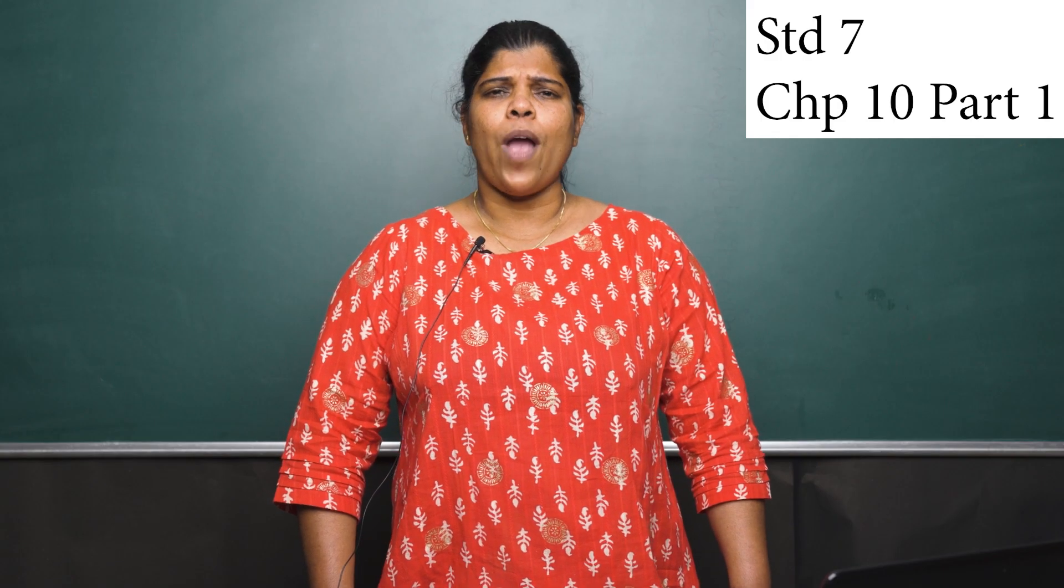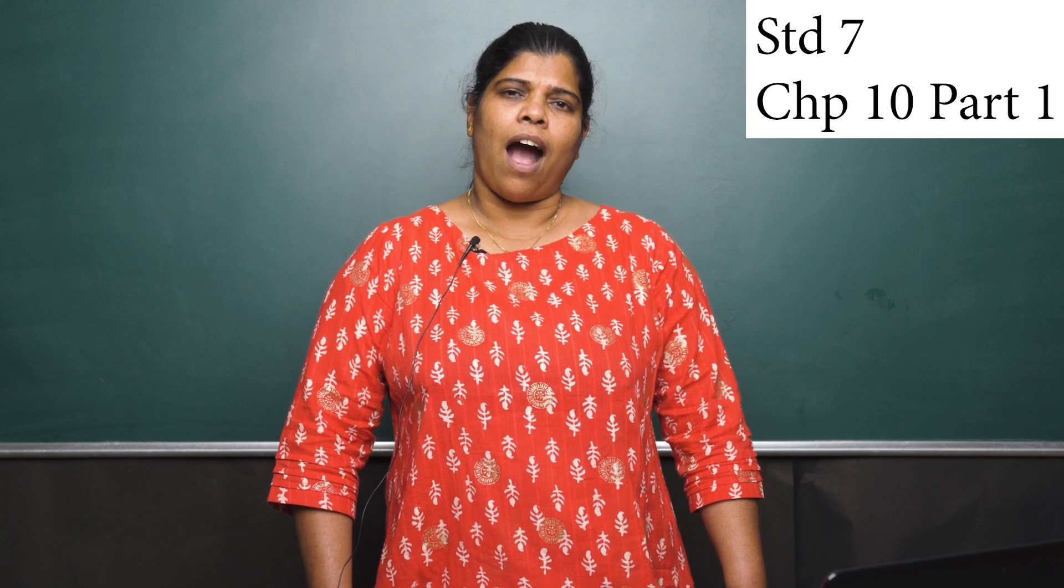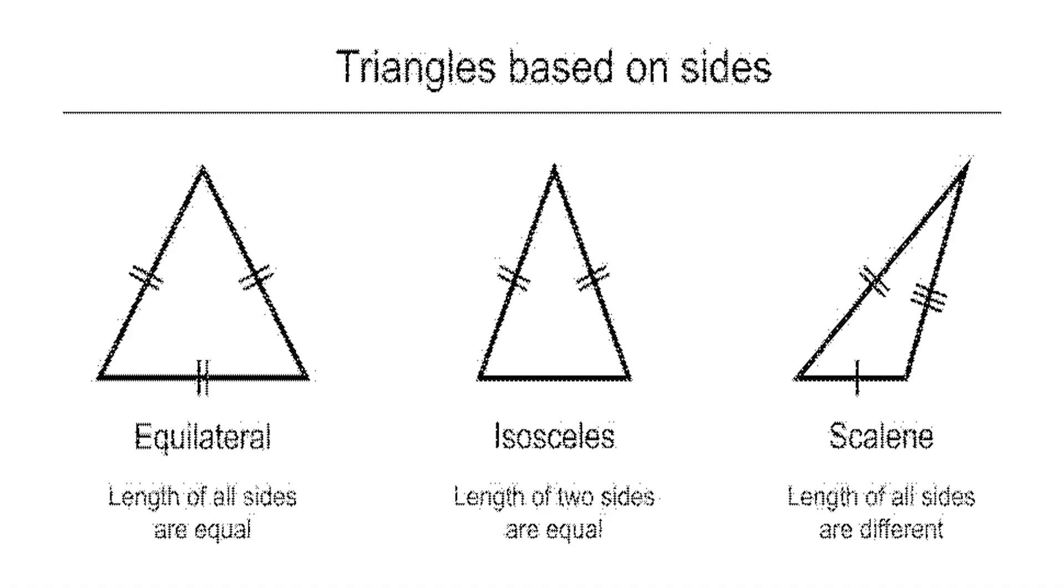Also students, you have learned in class 6, triangles are classified based on its sides as equilateral triangle, wherein all the sides are equal. Isosceles triangle, wherein two sides are equal, and scalene triangle, wherein none of the sides are equal.